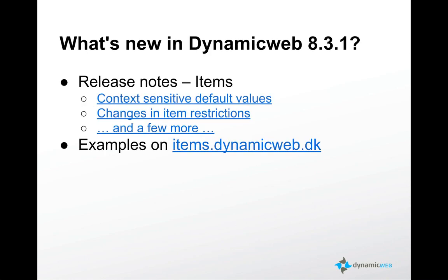The newest release of Dynamic Web is 8.3.1 and actually we are on 8.3.1.1 right now. In the release notes there are quite a few things regarding items and I've highlighted two of them: one is context-sensitive default values and another is changes in item restrictions. And there are a few more item changes.